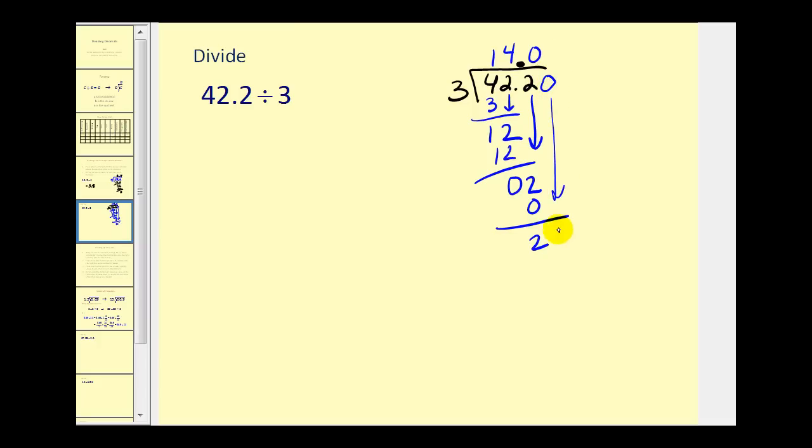So we add a zero here, and we bring it down. How many threes in 20? That would be 6. 6 times 3 is 18. We subtract. We need another digit, so we add another zero. Bring it down. How many threes in 20? Well, we just asked that question, and that was 6.